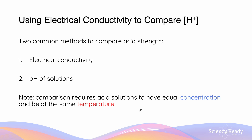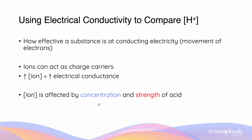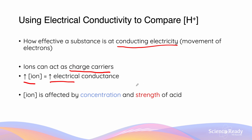Besides using pH to compare strength, we can also use electrical conductivity. Again, solutions need to have equal concentration and be at the same temperature for this to be valid. Electrical conductivity is the effectiveness of a substance to conduct electricity. Electricity is the movement of electrons, and ions can act as charge carriers because they are charged. If we have more ions, we have greater electrical conductance. The number of ions in solution is affected by both the concentration and the strength of the acid.